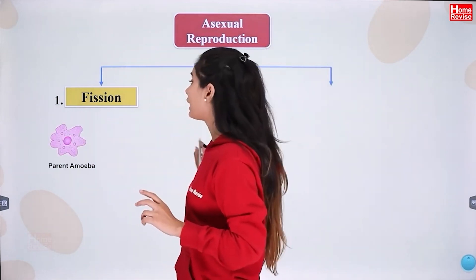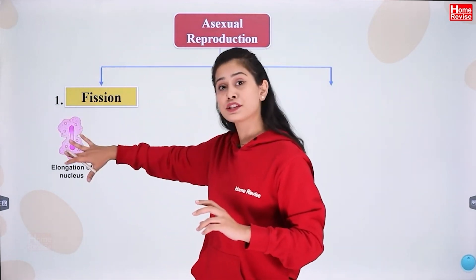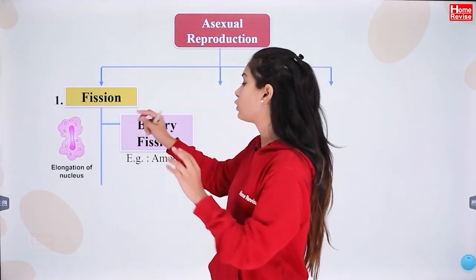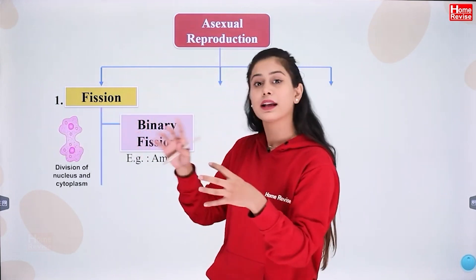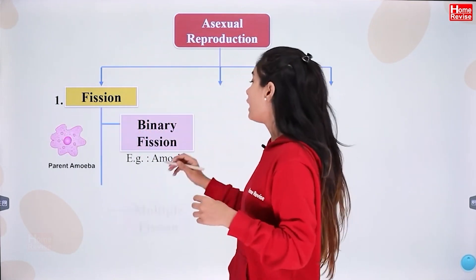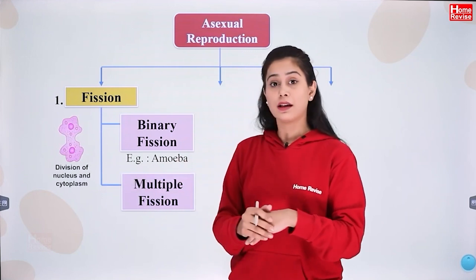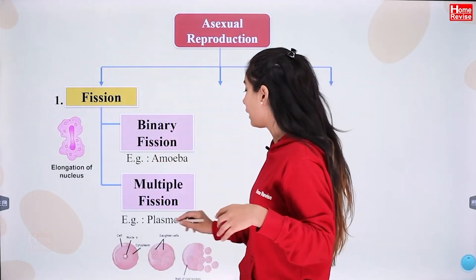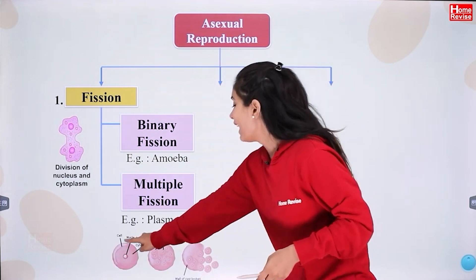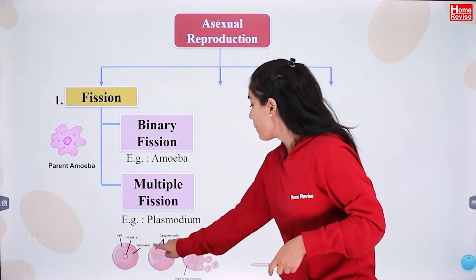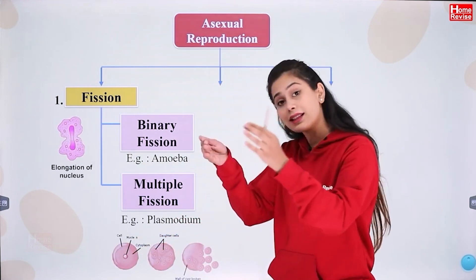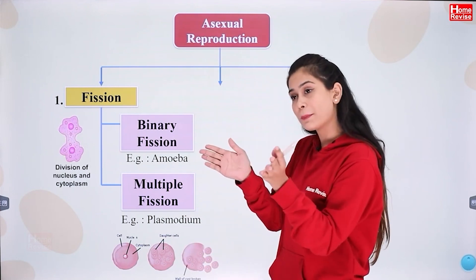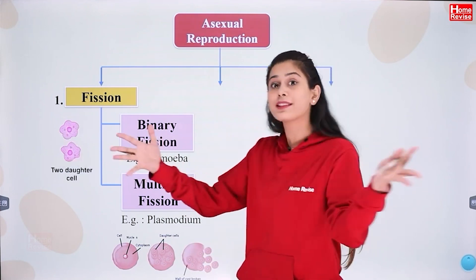We have seen the amoeba example. In fission, it is not only binary fission — 'binary' means two, so it is divided into two parts. That is the amoeba example. One is multiple fission, where many cells come from one cell, like we can see in plasmodium. There is one cell, and many daughter cells form inside. Then its cyst wall breaks and many cells are released at one time.